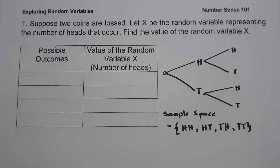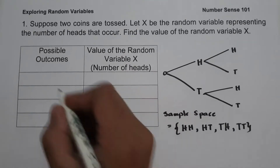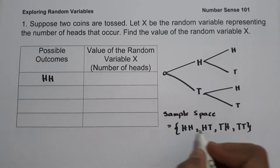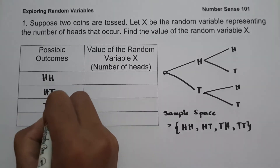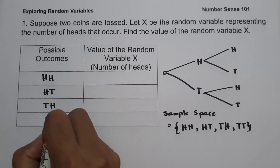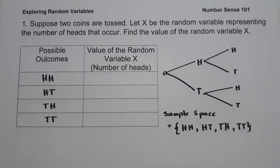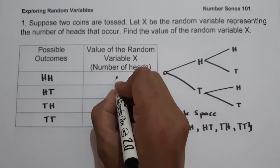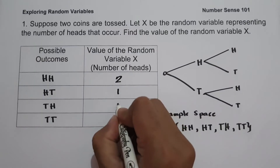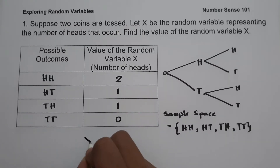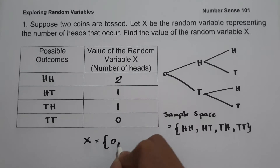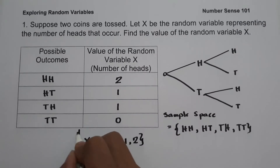To complete the given table, all we have to do is count the number of heads in each outcome and assign that number to the outcome. For head-head we get 2, head-tail gives 1, tail-head gives 1, and tail-tail gives 0. So the possible values of the random variable X are 0, 1, and 2.